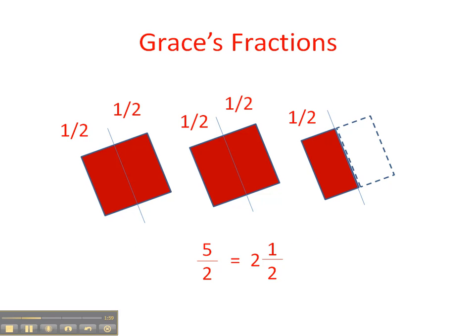And another way to put this, five over two is the same thing as two and one half. So this is important to remember. This is an example of a mixed number.